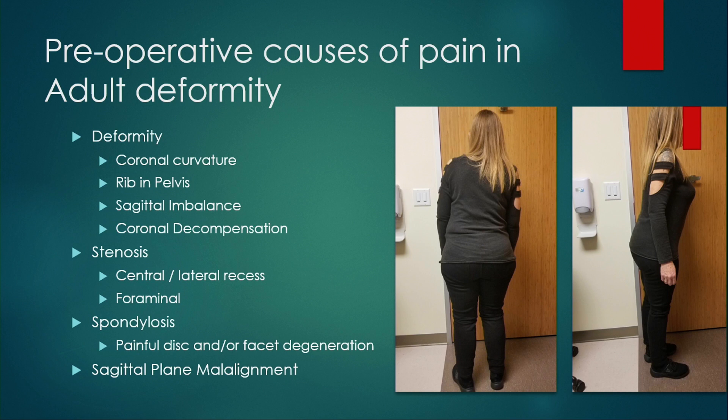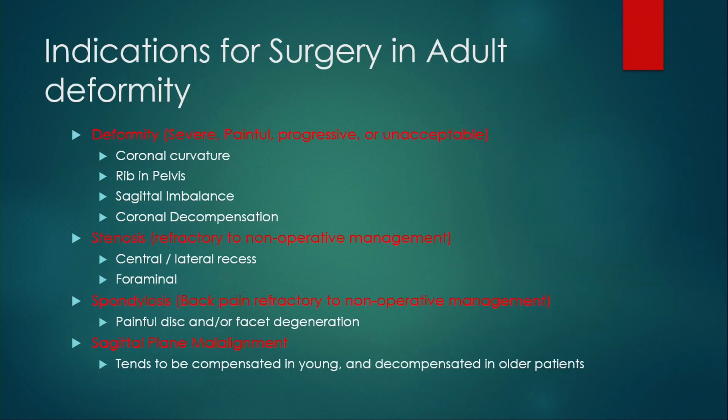In terms of preoperative causes of pain, the deformity itself can be a pain generator — that can be a coronal curvature, rib and pelvis deformity, sagittal malalignment, or coronal decompensation. With adult patients we also have to think about spinal stenosis, which could be central, lateral recess, or foraminal. Spondylosis can cause both back pain and projected or referred pain, and sagittal malalignment is another cause of pain.